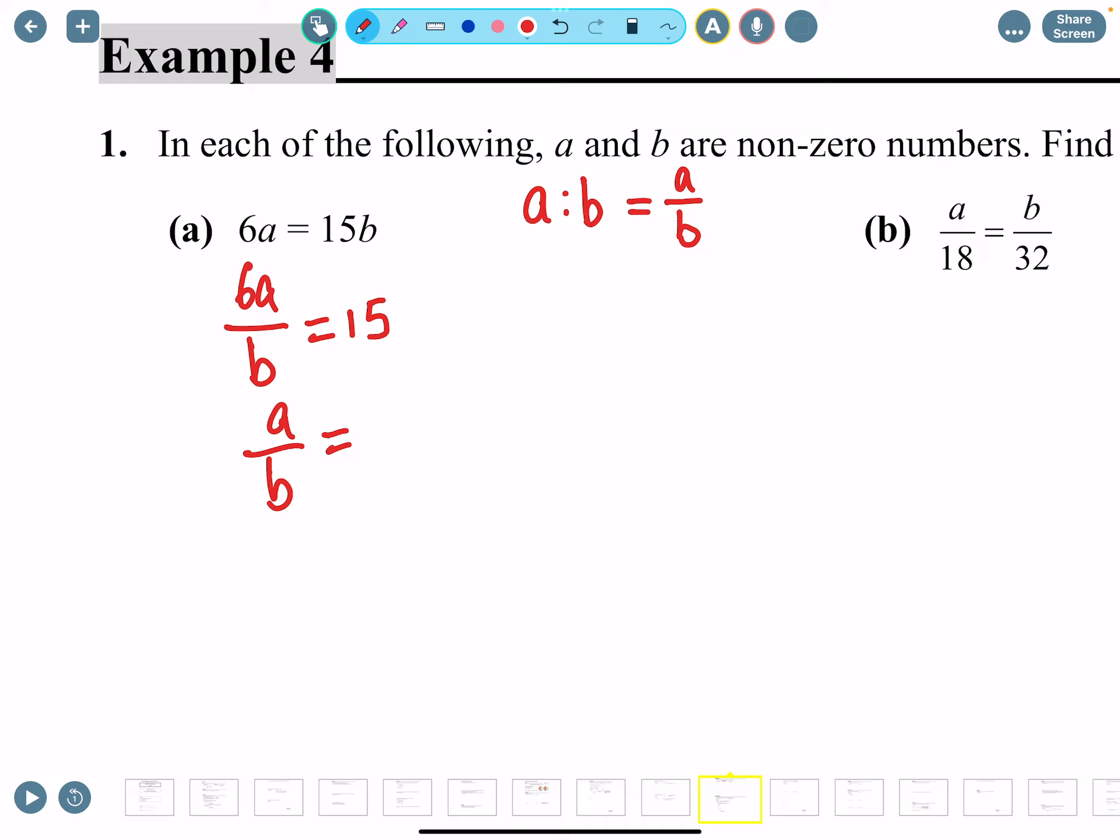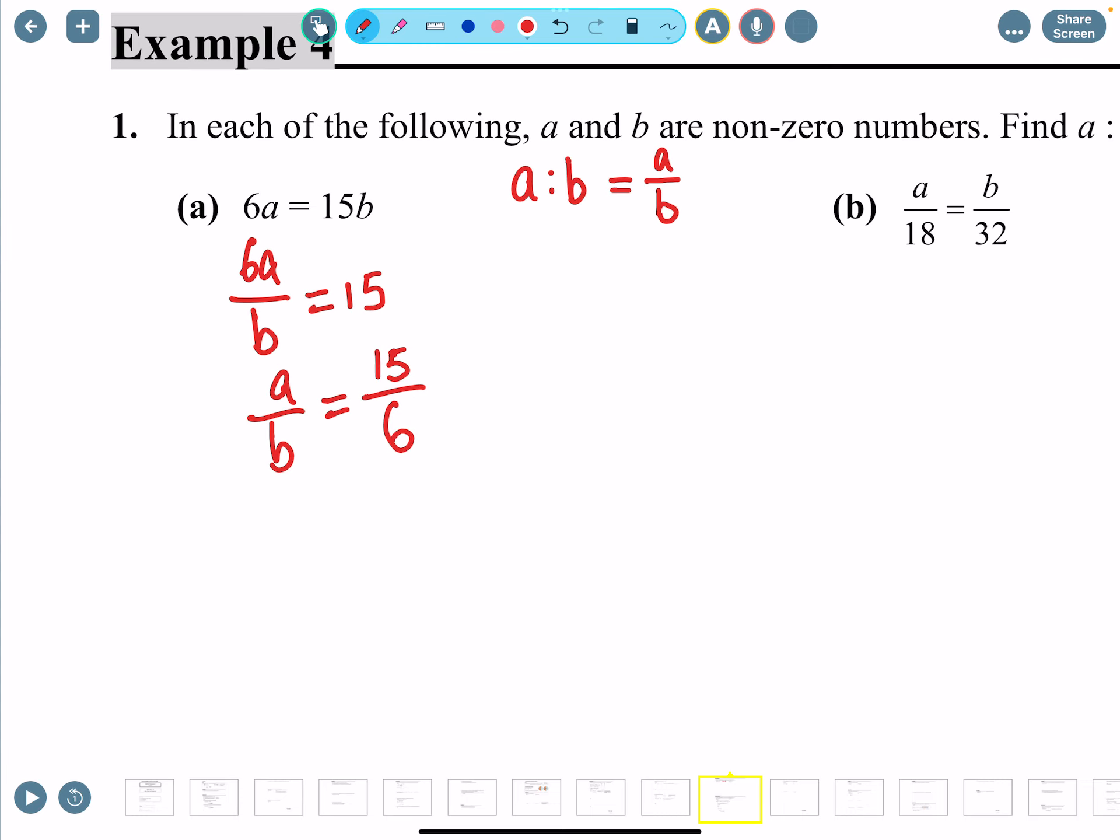So on the right side is going to be 15 divided by 6. It usually looks like the opposite on the other side anyways. So now we have a over b and that can be changed to a ratio a to b is equal to 15 to 6.